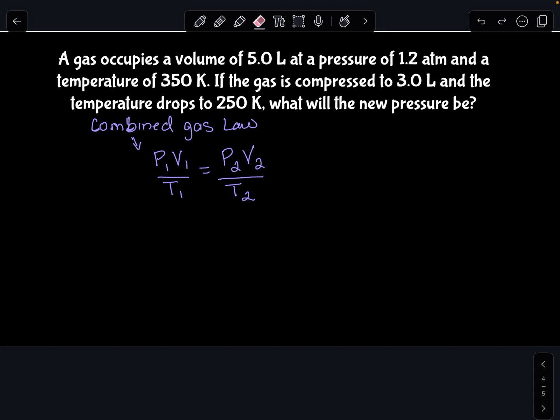Okay, so notice we have six variables here, right? Which means, in our problem, if we see a pressure, volume, and a temperature, we know we're working with the combined gas law, and we know we're going to be given five of the six variables. So when you're solving, go ahead and make sure of the following.